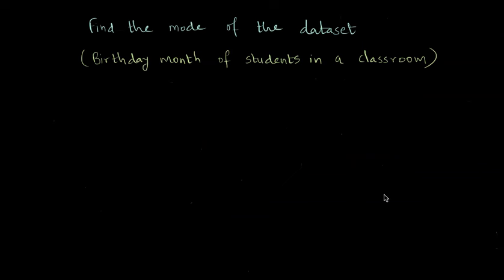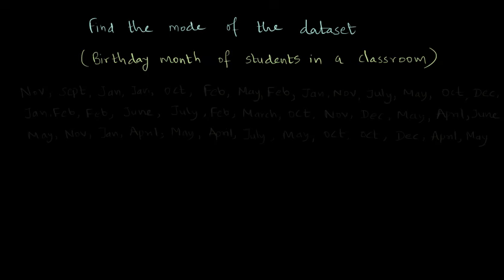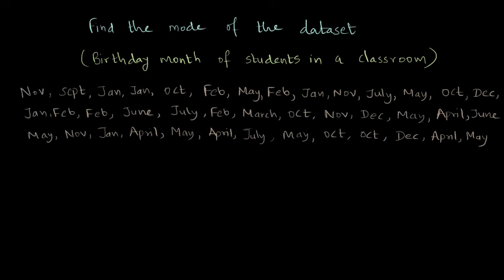Let's say we wanted to find the mode of the given dataset, and the data is the birthday month of students in a classroom. Some student went around asking everyone's birthday and noted the birthday months down. Now the student has this raw data, and you need to find out the mode.